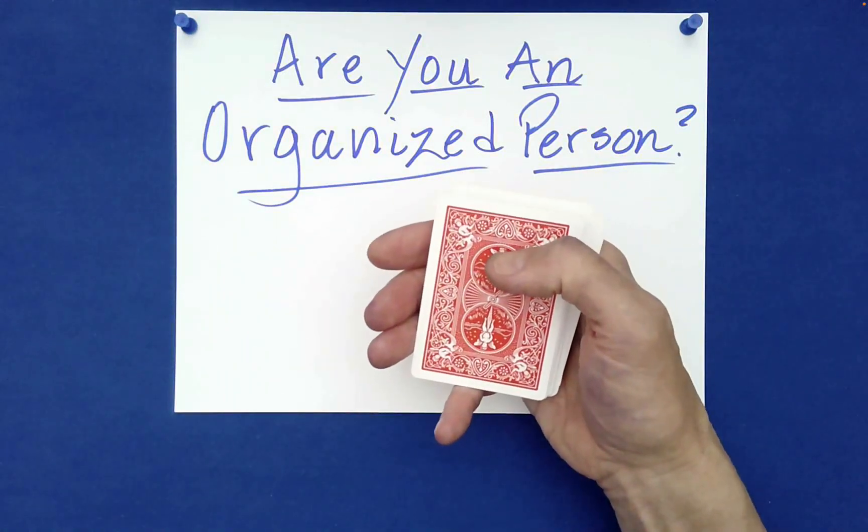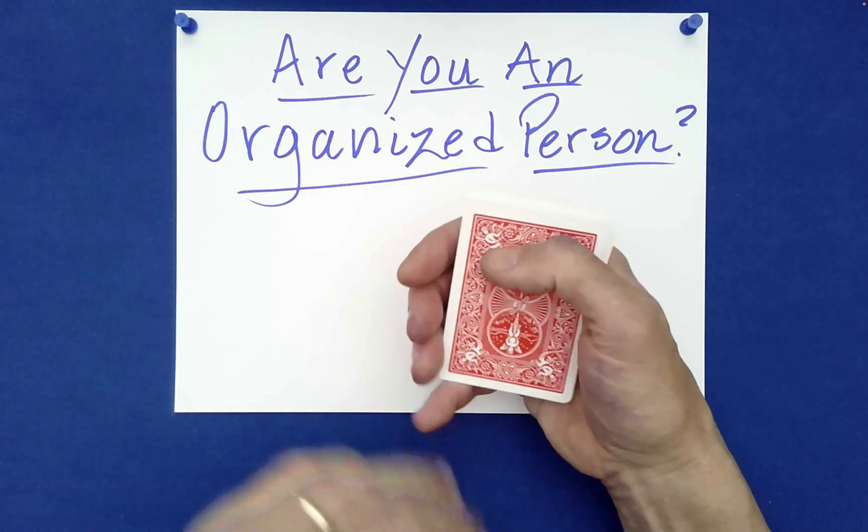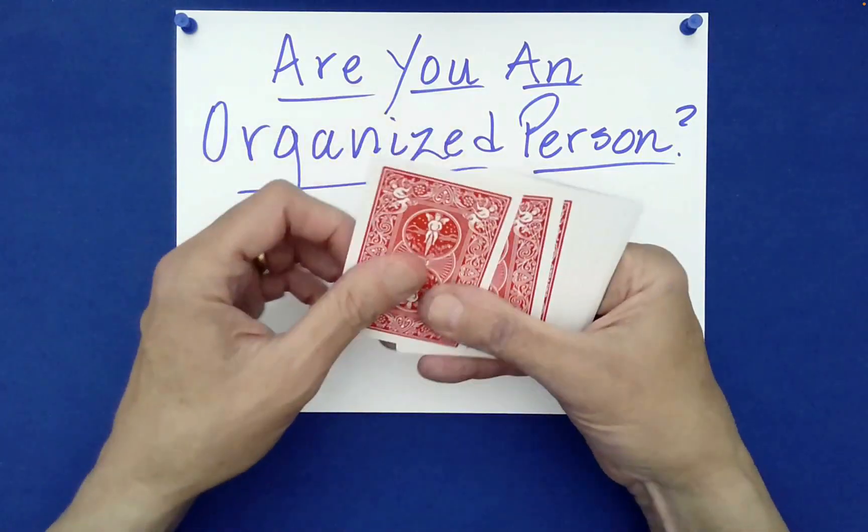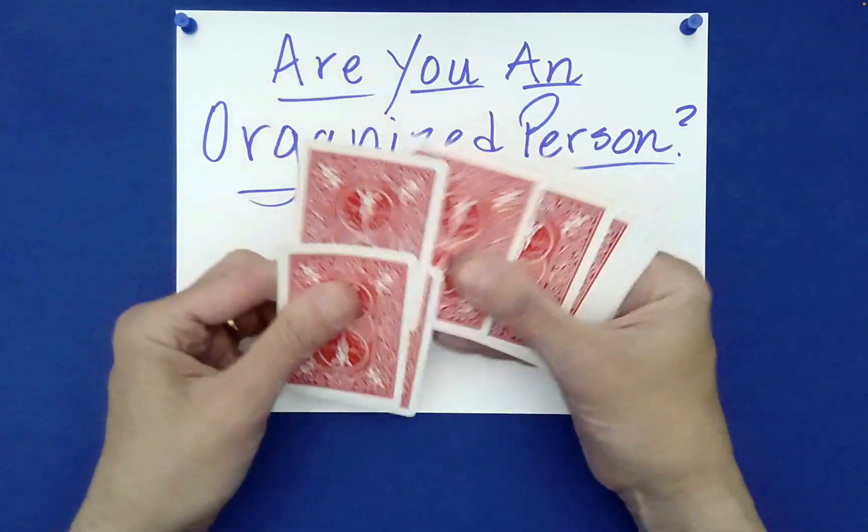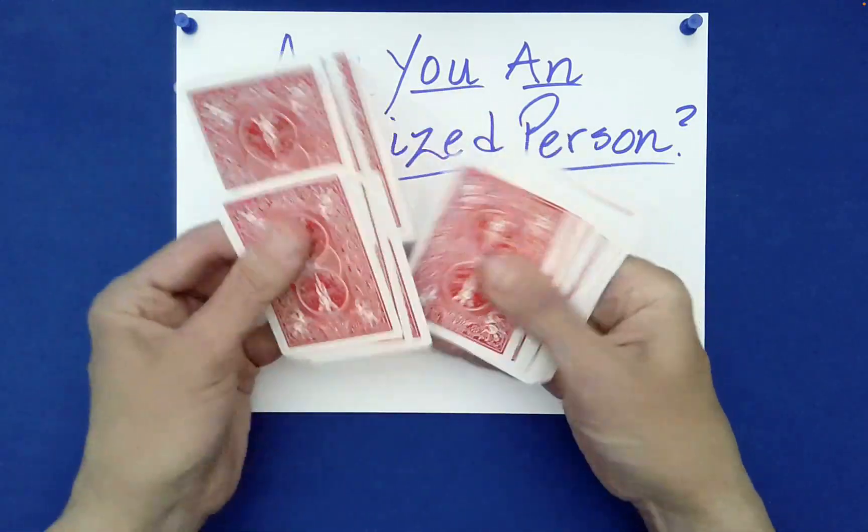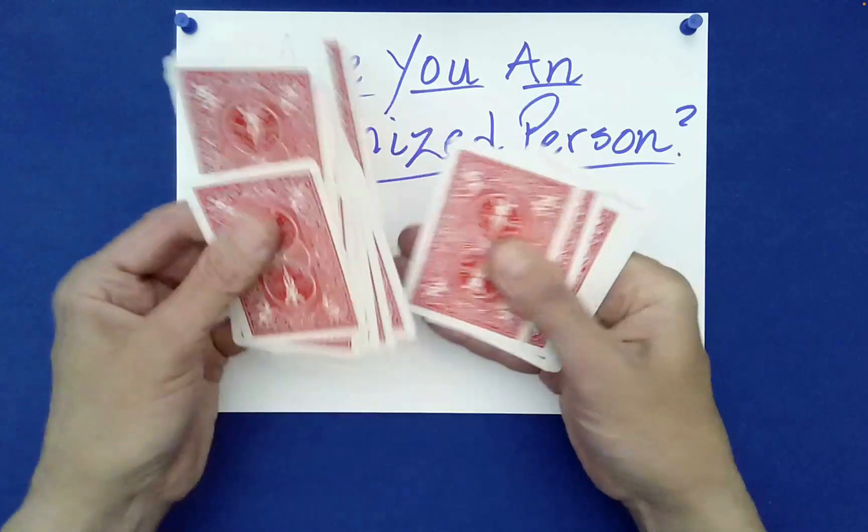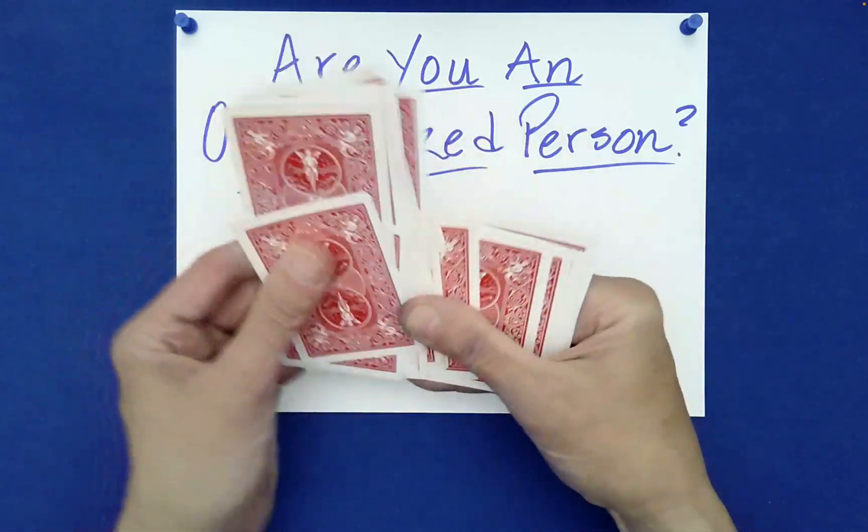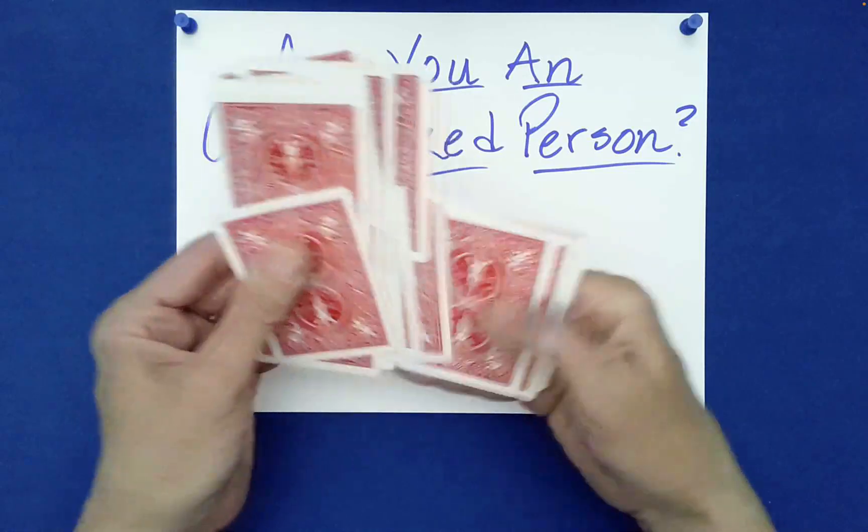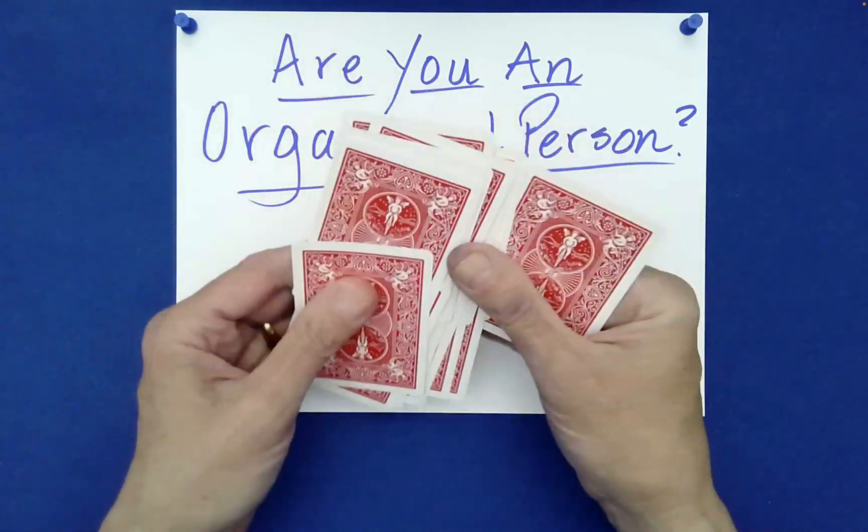Have you heard of the even or odd up jog? It's kind of a fun way to mix cards. So, if we do an even up jog, what we do is we push forward or jog forward the even position cards. Those would be the cards in positions 2, 4, 6, 8, and so forth.